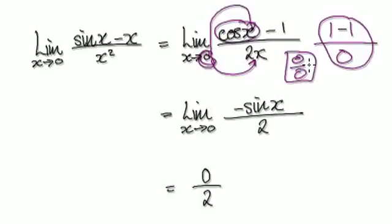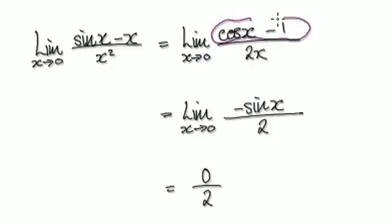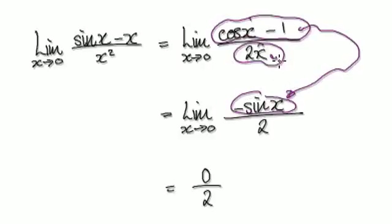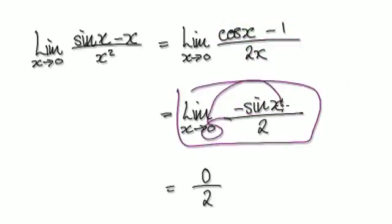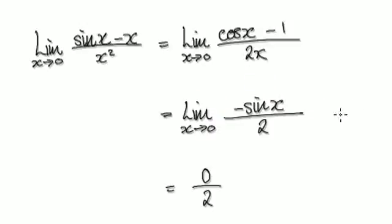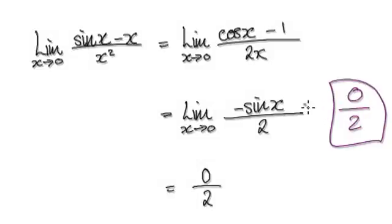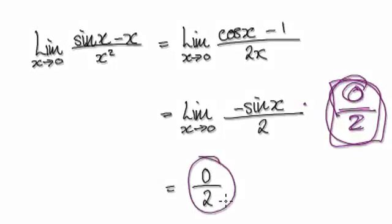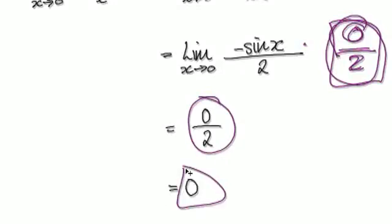This is still 0 over 0 — still indeterminate. So we can apply L'Hôpital's rule again. Differentiate the numerator — that gives you this. And then differentiate the denominator — that gives you this. Now check: sin of 0 is 0, negative 0 is 0. So it would be 0 over 2. Well, 0 over 2 is a perfectly legitimate number — nothing breaks down. So the answer is 0 divided by 2, which is 0.